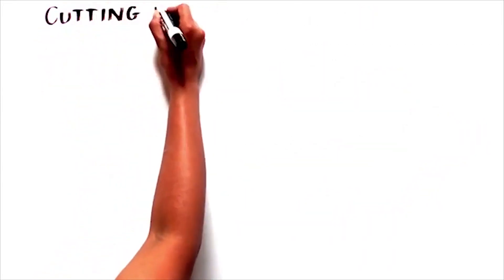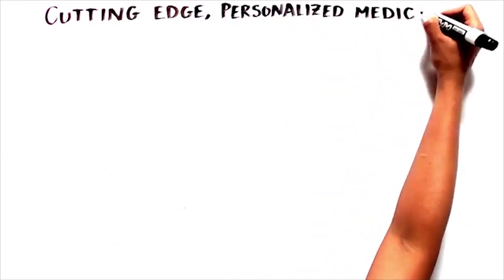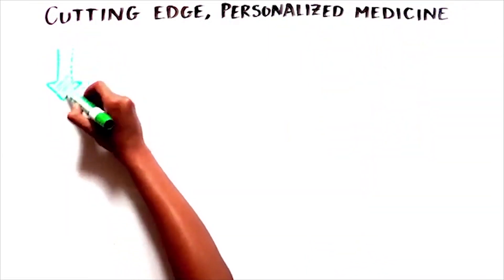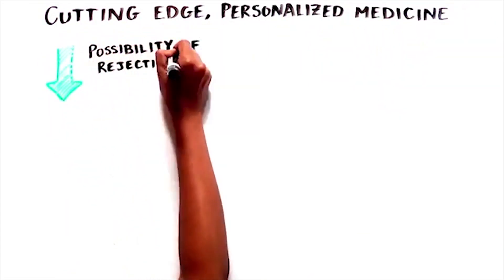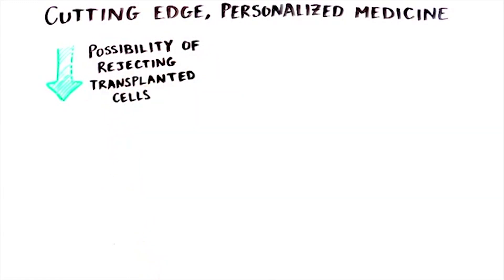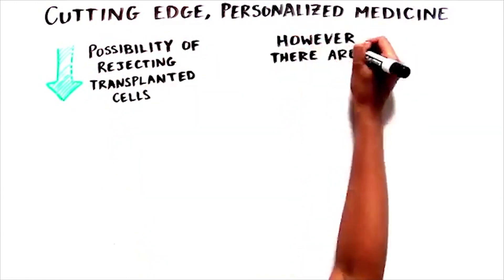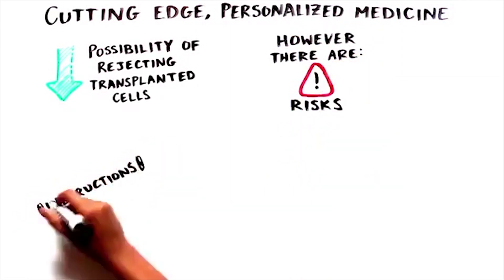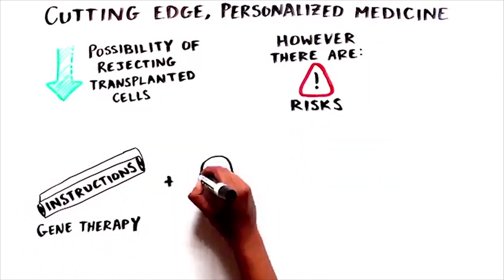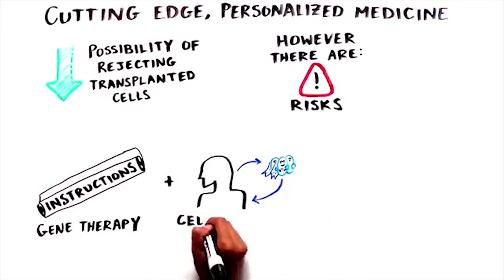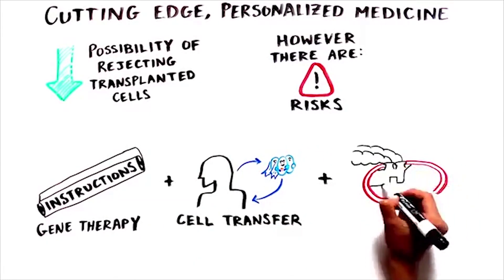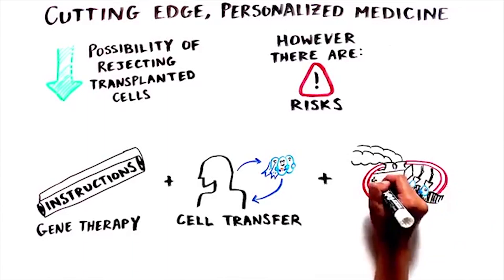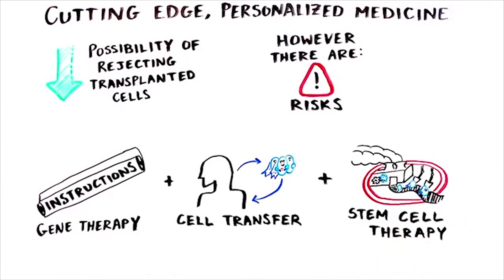This cutting-edge personalized medicine approach lowers the possibility of the body rejecting the transplanted cells, because we are using the patient's own cells to fight cancer. However, there are risks inherent to novel therapies. This new experimental cancer immunotherapy utilizes gene medicine, cell transfer, and stem cell therapy, providing an optional treatment for cancer patients who have few other options. Insurance coverage is required for the non-research-related costs.